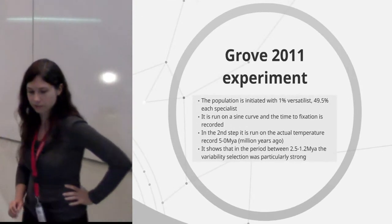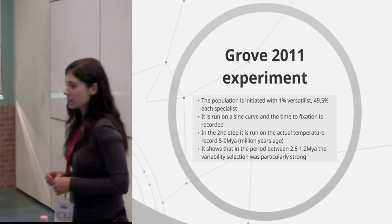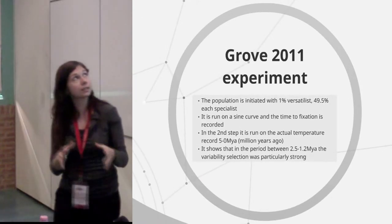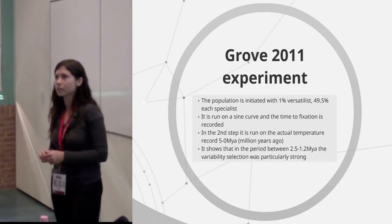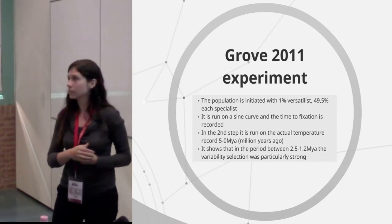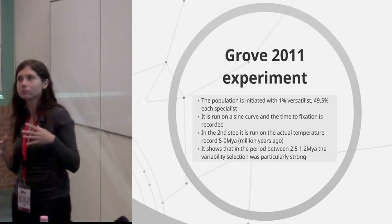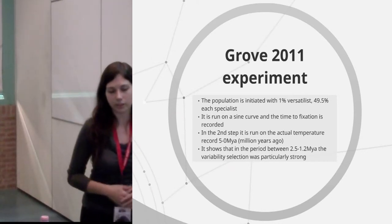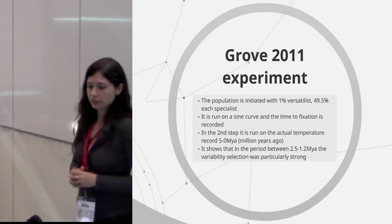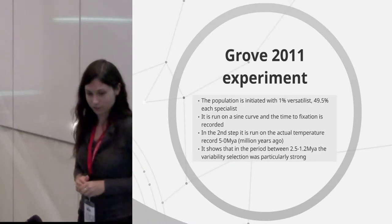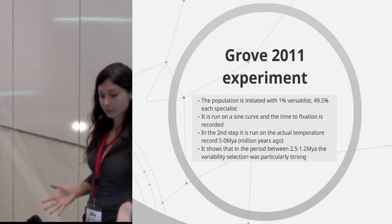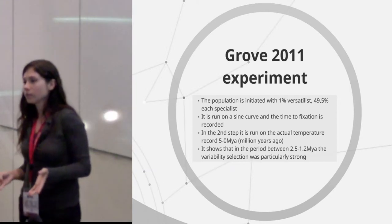And then Montgrove did this fantastic experiment when he introduced the versatilists in a tiny, tiny proportion of the population. And he ran it first, again, the sine curve and then against the real environmental record of the temperature in the past 5 million years, which was a pretty genius idea actually.